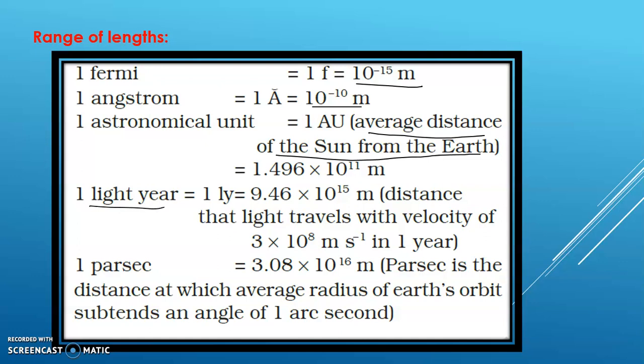Next is the light year. A light year is the distance that light travels with a velocity of 3 into 10 to the power of 8 meters per second in one year. 1 light year is equal to 9.46 into 10 to the power of 15 meters.